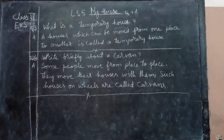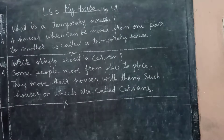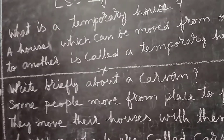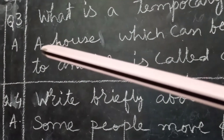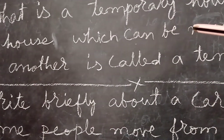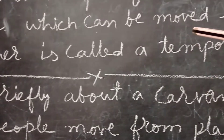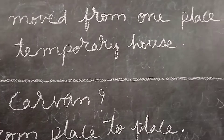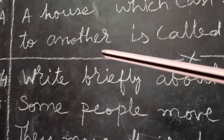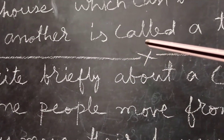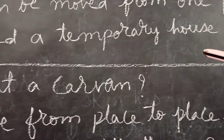Are called Karwans. Now I will show you these question answers closely. You can look at the board and copy these question answers. Lesson number 5: Karwan. First and second question answers are already written. This is the third question: what is a temporary house? A house which can be moved from one place to another is called a temporary house.